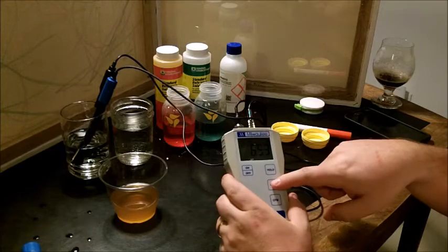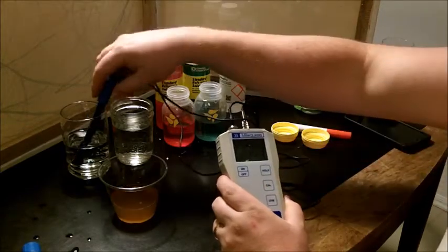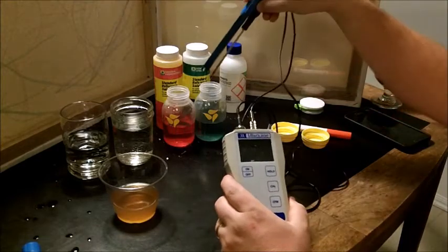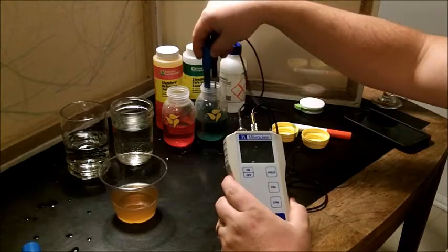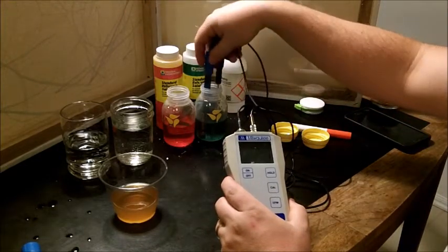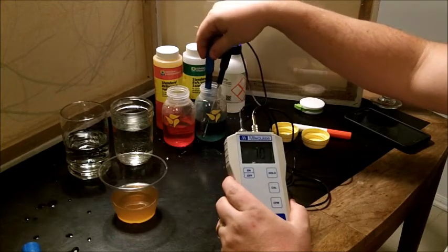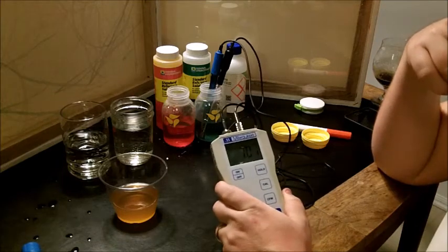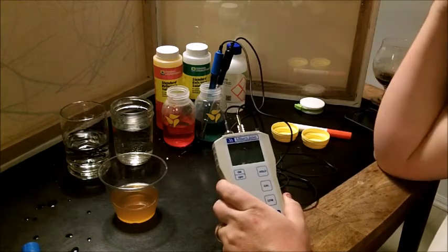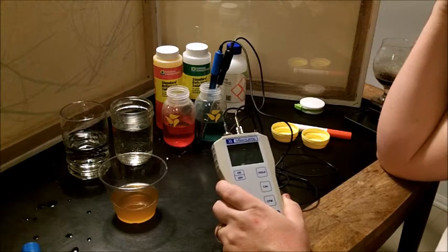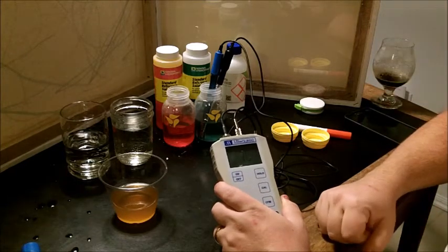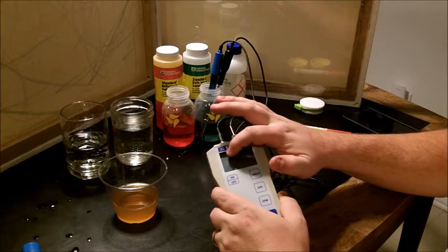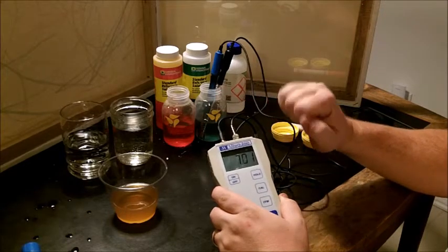What we're going to do is hit calibrate, so it starts blinking 7.01. I like to shake it off, make sure there's no air bubbles in there, and now we put it in the 7.01 solution. We'll take a quick break and come back.